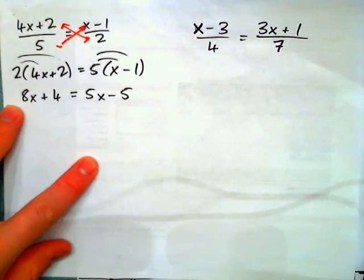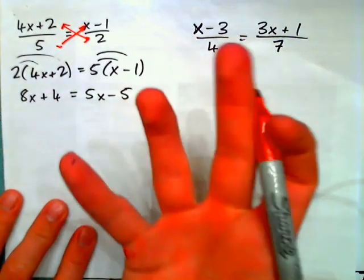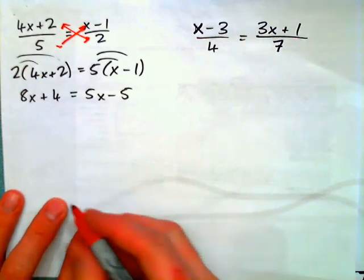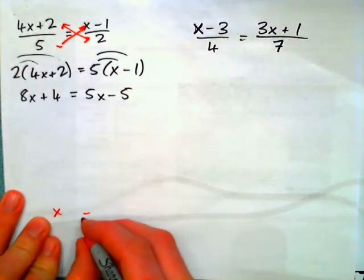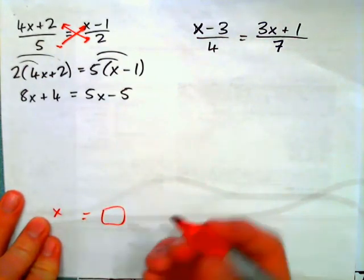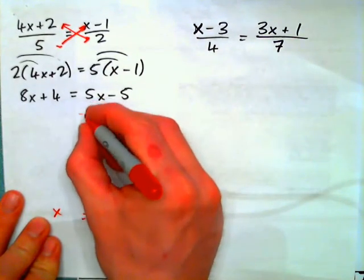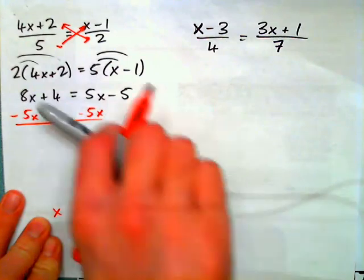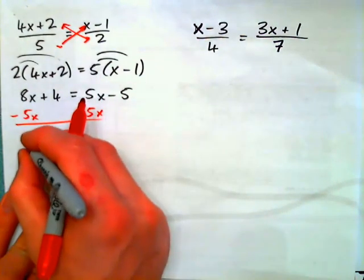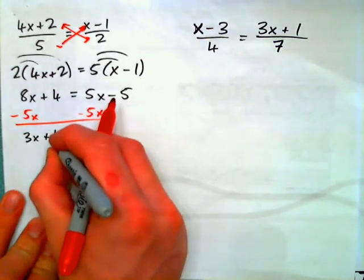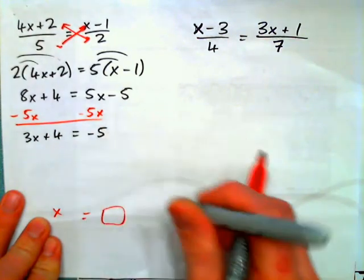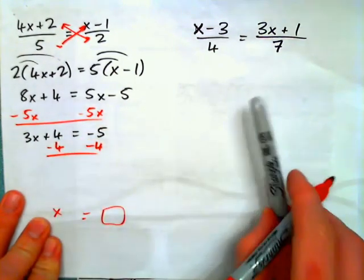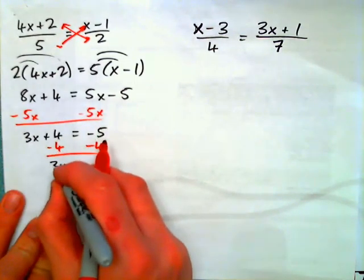Now add like terms. Or excuse me, add or subtract something from both sides. Because what we're looking for is x on one side and a number on the other. So I would immediately subtract that 5x from both sides, because then I'll just be left with 3x over here. 8x minus 5x is 3x. I have 3x plus 4 equals negative 5. Now just subtract 4 from both sides because you want to get 3x by itself.